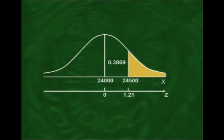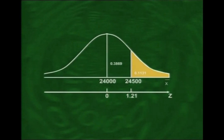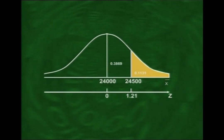Hence, we need to compute the area between Z equal to 1.21 and plus infinity. According to the area table, the area between Z equal to 0 and 1.21 is 0.3869. Since the total area from Z equal to 0 to plus infinity is 0.5, subtracting 0.3869 from 0.5, we obtain the area from Z equal to 1.21 to plus infinity, which comes out to be 0.1131.